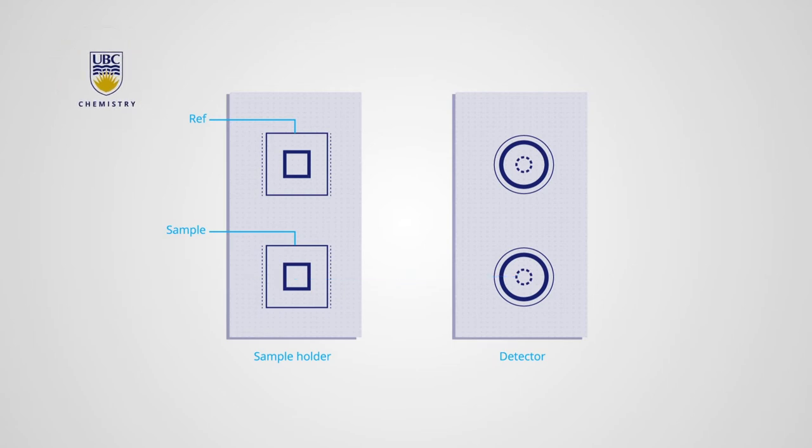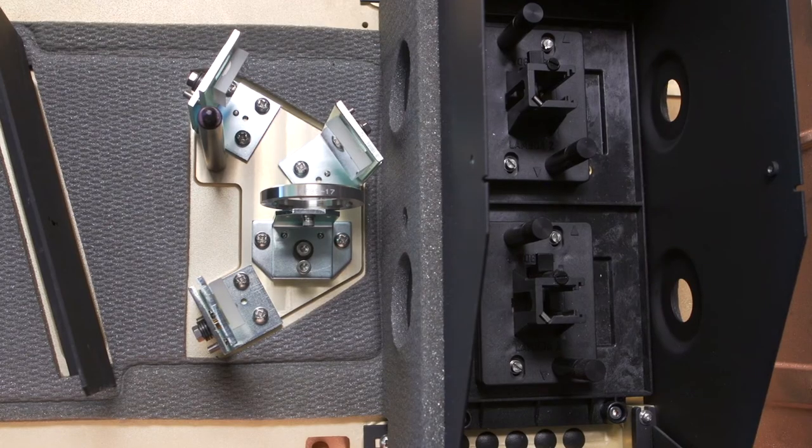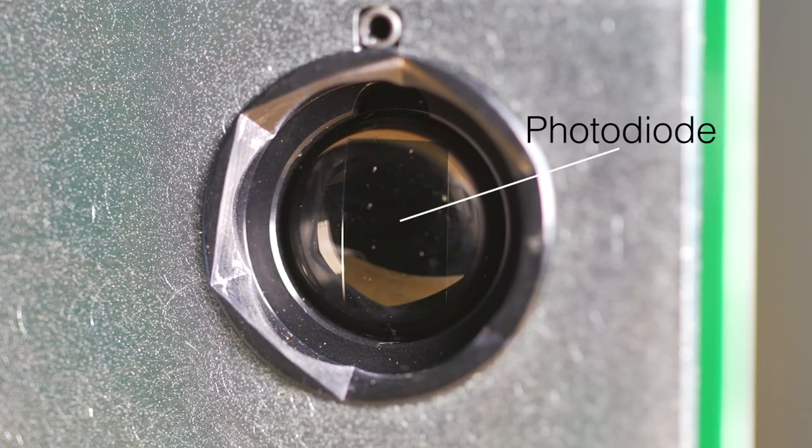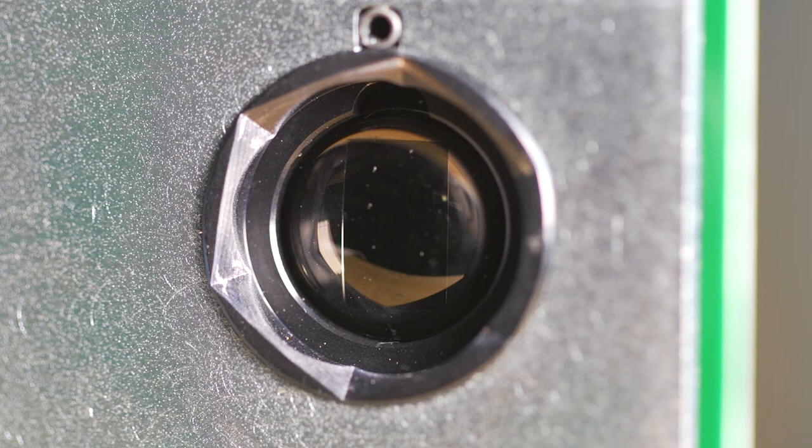Each light beam continues onto a detector. The detector setup in this instrument is a bit unique. It uses two photodiodes instead of the more common and more expensive single photomultiplier tube, or PMT. The reference and sample beams strike different detectors, while a PMT setup would use a chopper and then recombine the beams onto one PMT. In both cases, the signals are digitized and sent through electronics to a computer.